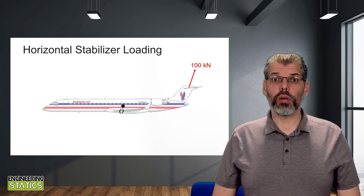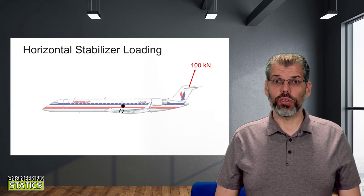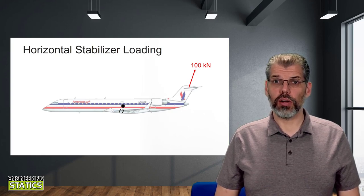In this example problem, we are going to analyze the effect of a 100 kN force acting on the horizontal stabilizer of a commercial jet aircraft.